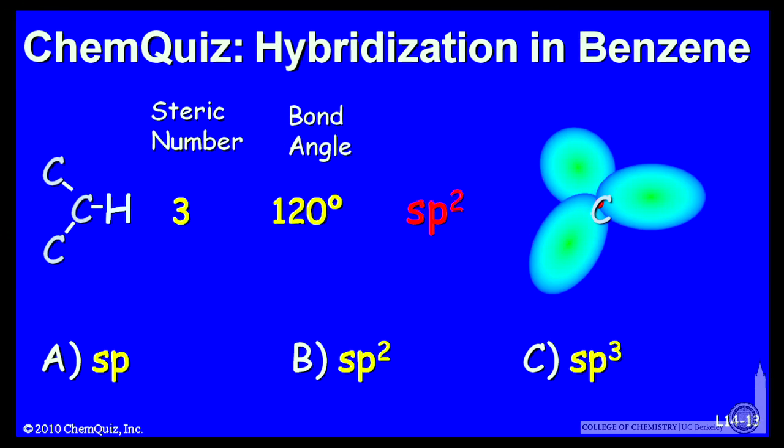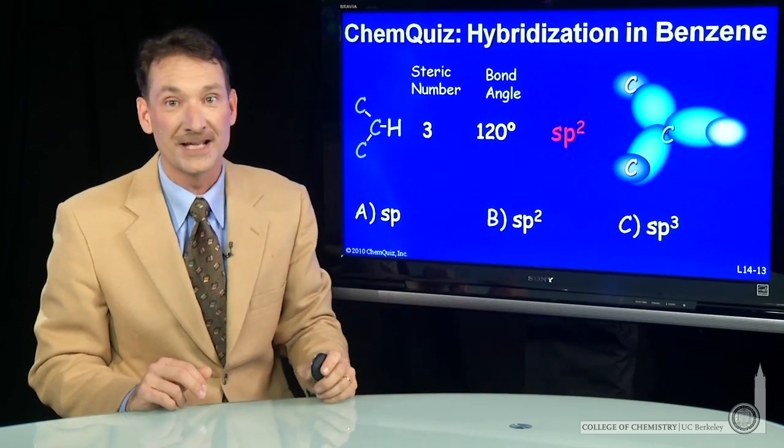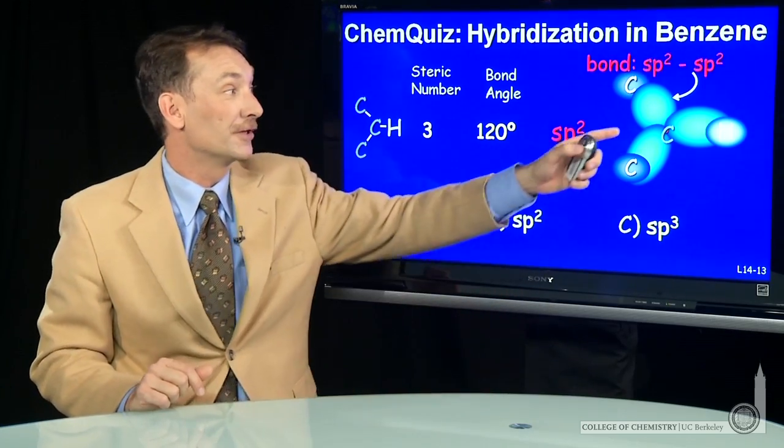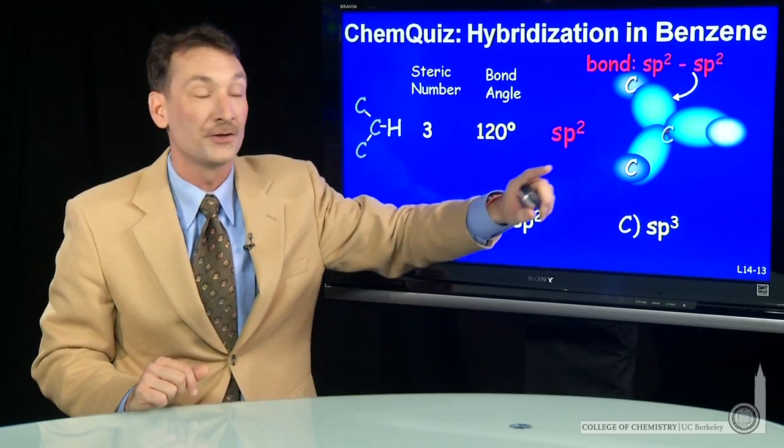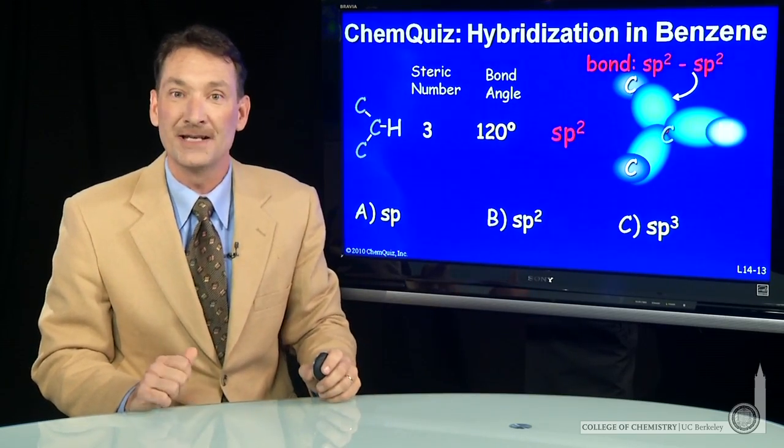So when carbons in benzene bond, they can use these atomic orbitals to form molecular orbitals to the other carbons and to the hydrogen. All the carbons are equivalent, so these carbons here will also be sp2 hybridized.